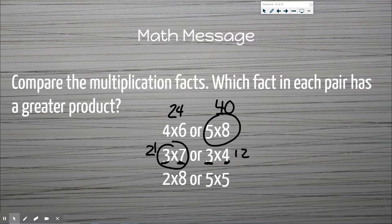Which is bigger: two times eight or five times five? You should have said five times five. Five times five is 25 and two times eight is 16. So we're looking at our factors there.